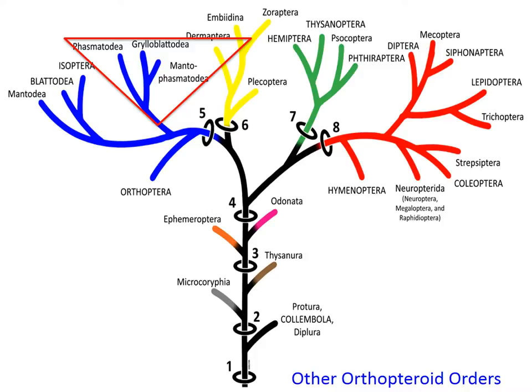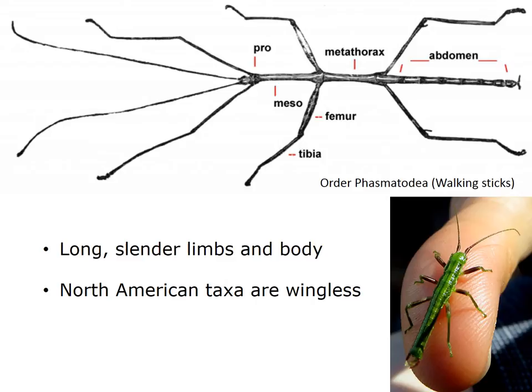There are a couple of other orthopteroid orders that are less commonly encountered and less diverse, but deserve to be brought up: Phasmatodea, Grylloblattodea, and Mantophasmatodea. The first of these is Phasmatodea, or walking sticks. These guys are long and slender, with long slender limbs and bodies. All North American taxa are actually wingless. They kind of come in two flavors: either very long and skinny, or more pudgy.